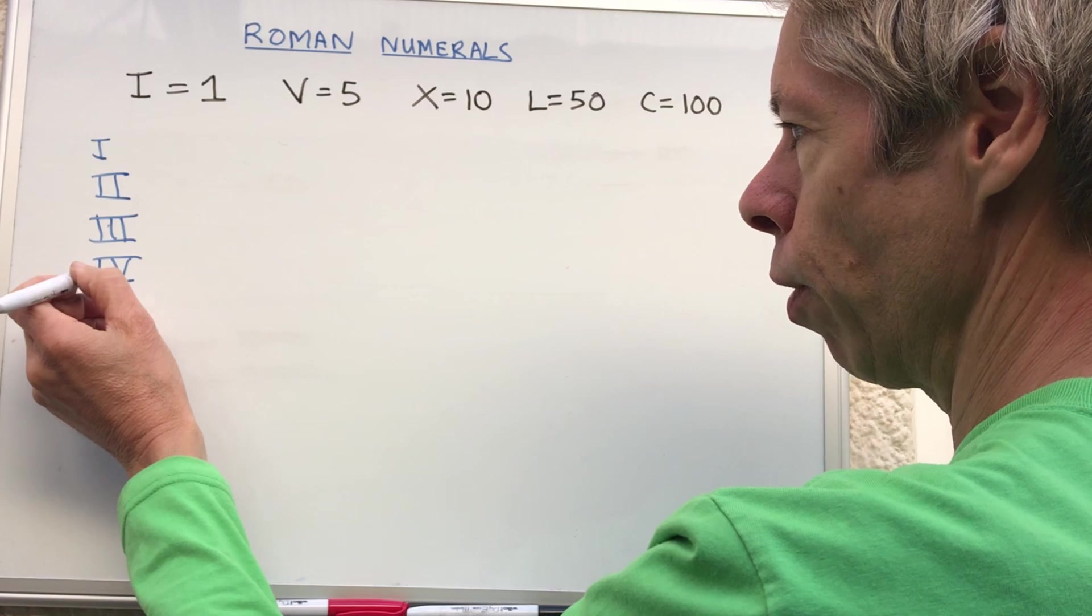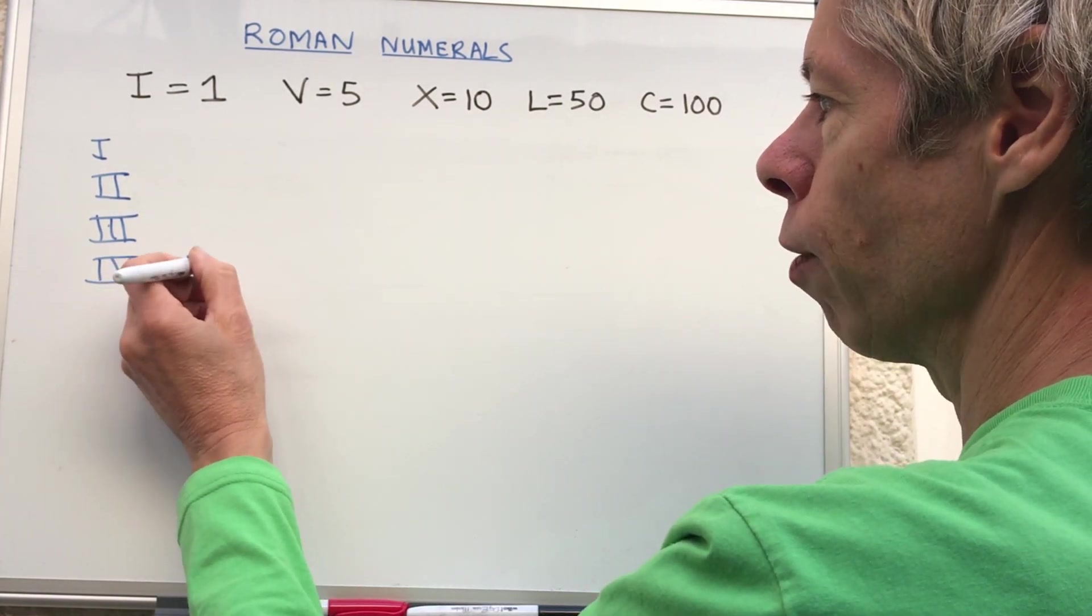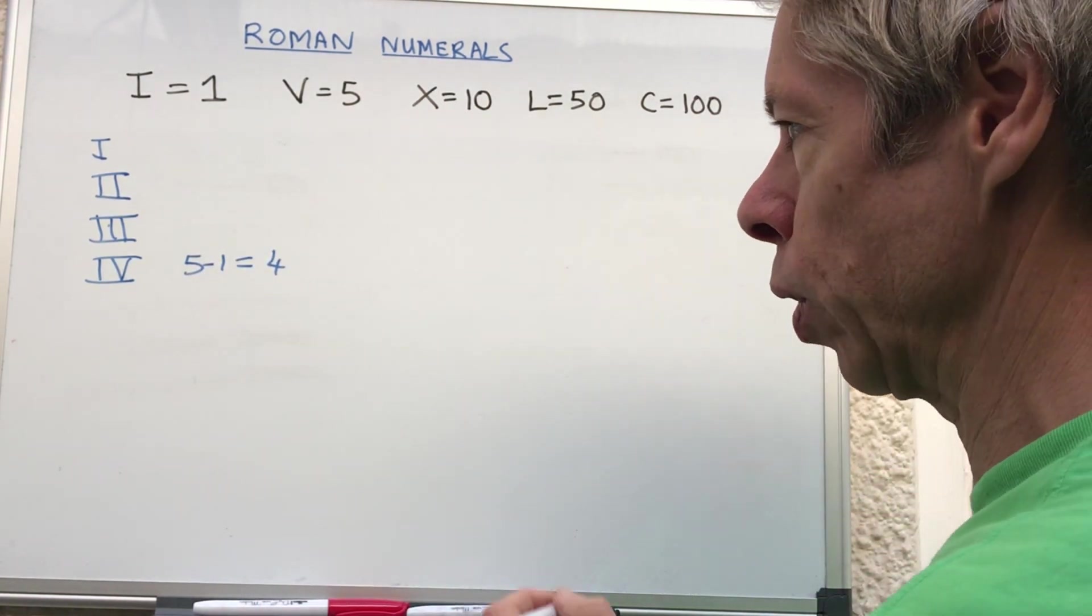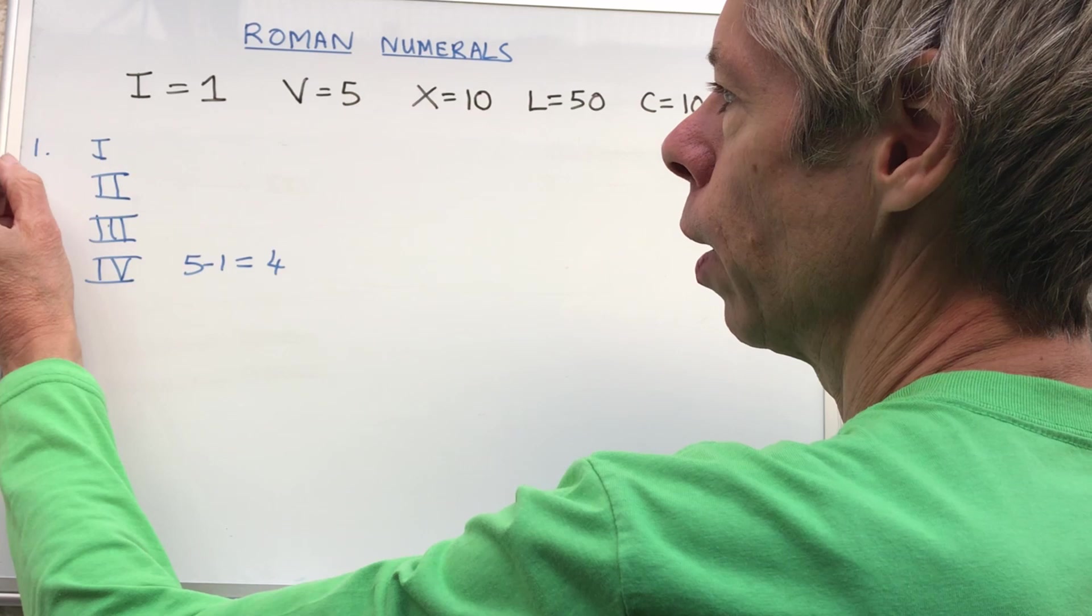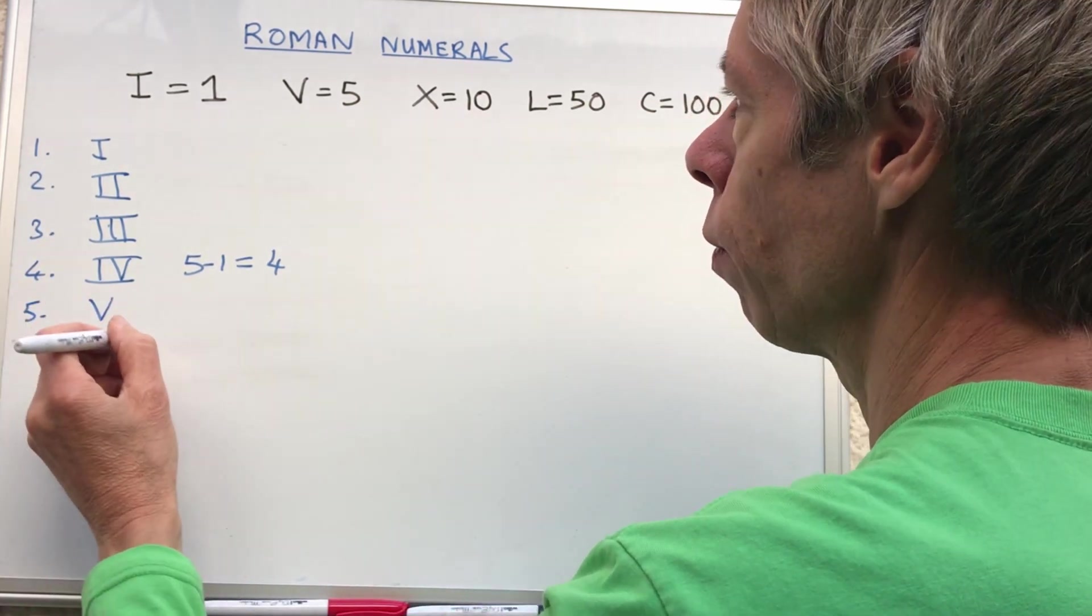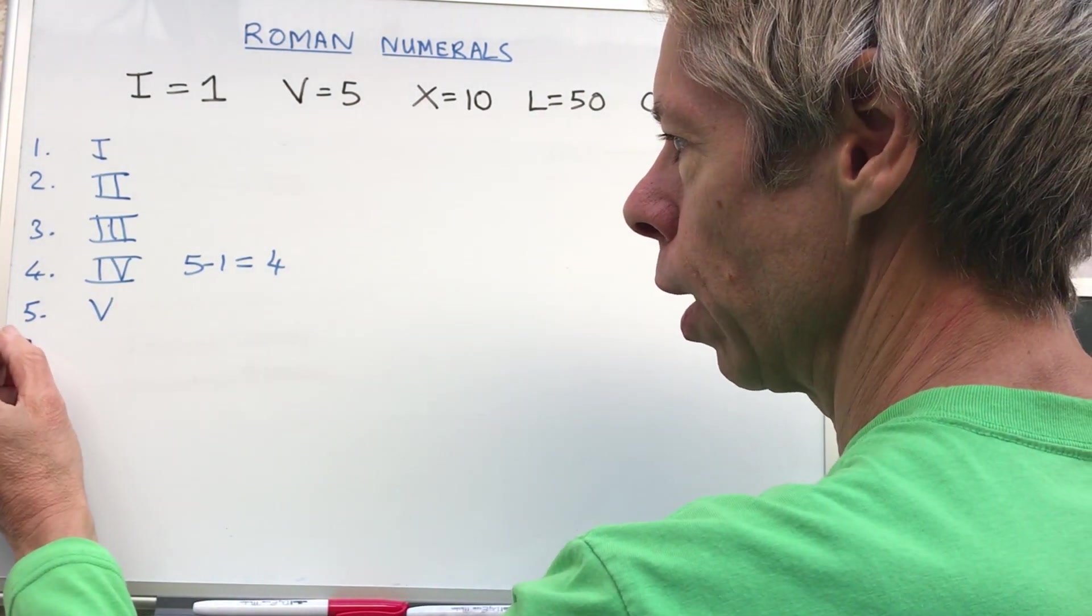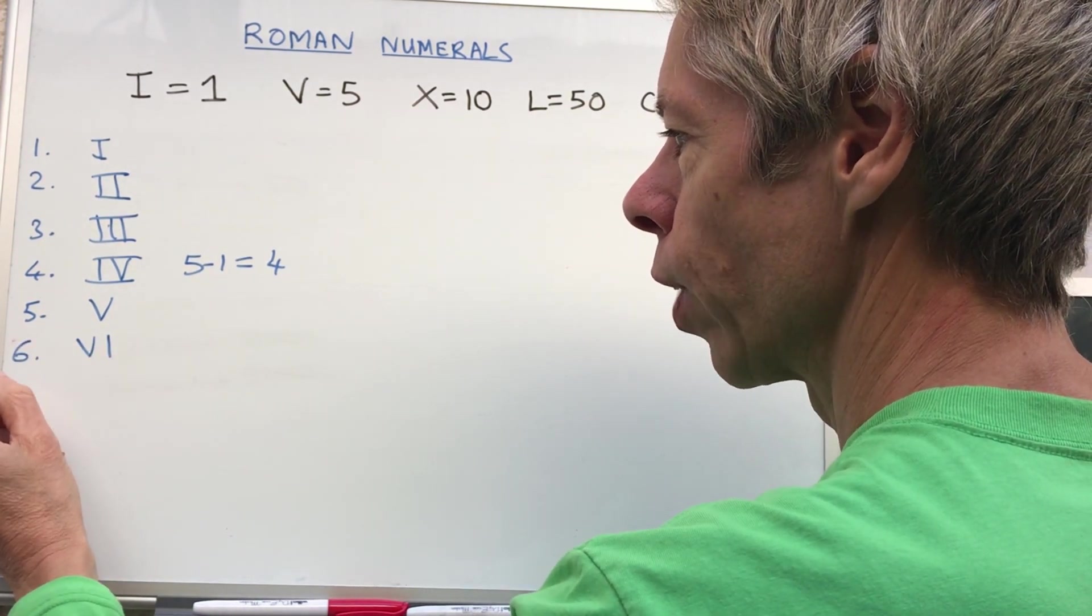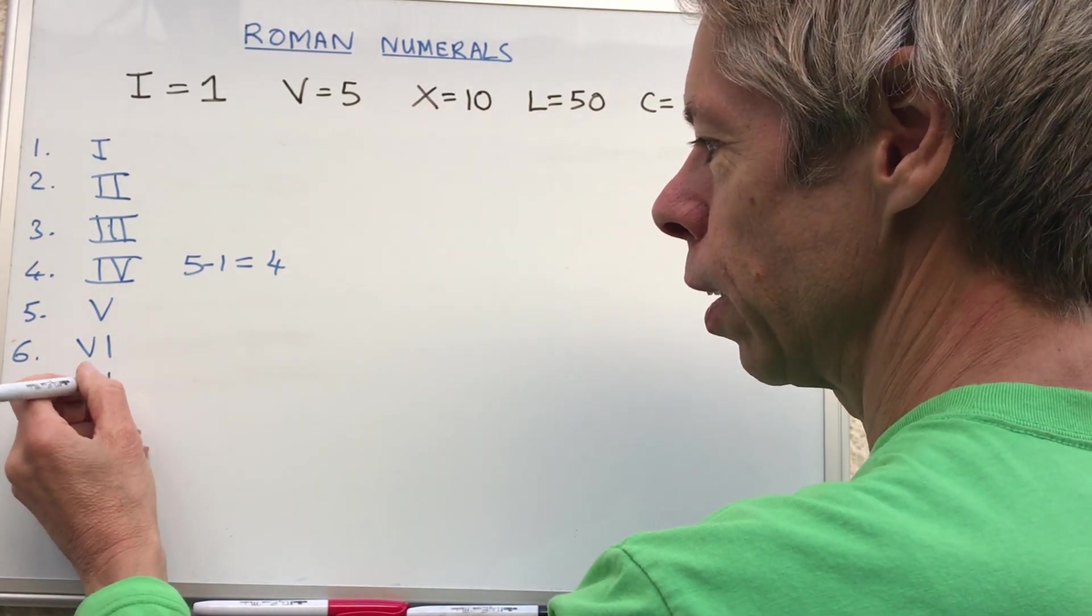If you've got a small number in front of a larger number, it's taken away, so that is literally five minus one equals four. It's a bit like doing simple mathematics. We've got one, two, three, four, then five is just the symbol V, and then six is V plus I, seven is VII.